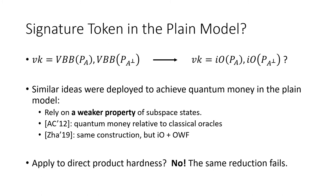One can try to apply the same idea to the direct product hardness property for subspace states. However, one runs into a technical problem and the reduction fails. Basically, if we follow the same reduction, the resulting task becomes very easy when instantiating VBB with IO. Although it does not say anything about the original game, it shows a technical barrier for replacing VBB with IO for direct product hardness. We refer to the full paper for more details.